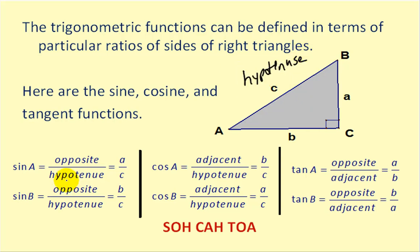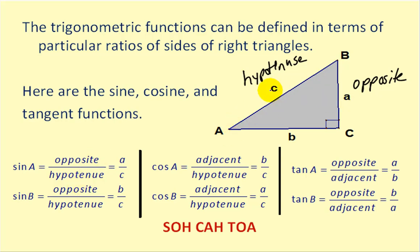The opposite and adjacent sides will change based upon which angle you're referring to. Going back to angle A, if we bisect angle A, the side that we run into would be the opposite side. So in terms of angle A, this is the opposite side. The sine of A is the ratio of the opposite over the hypotenuse — in this case, it would be A over C.